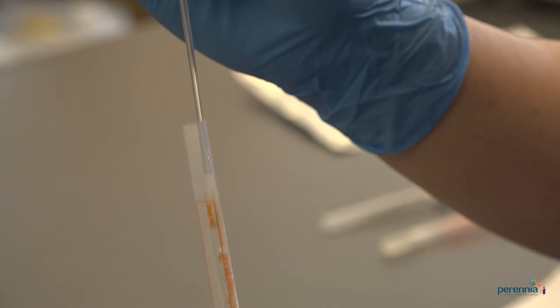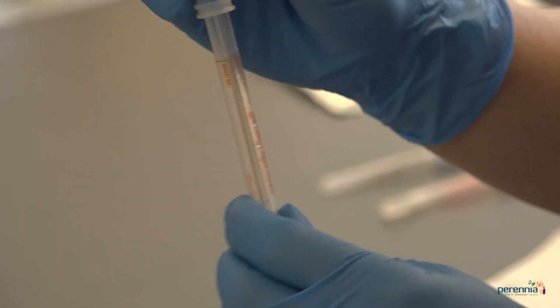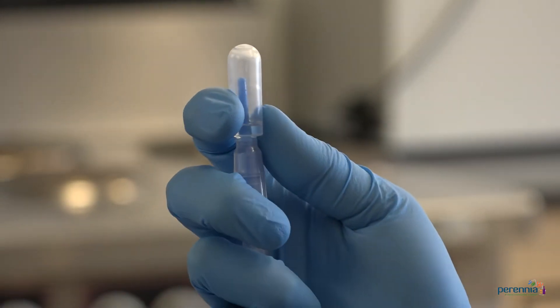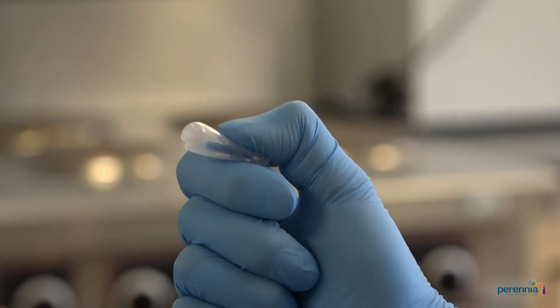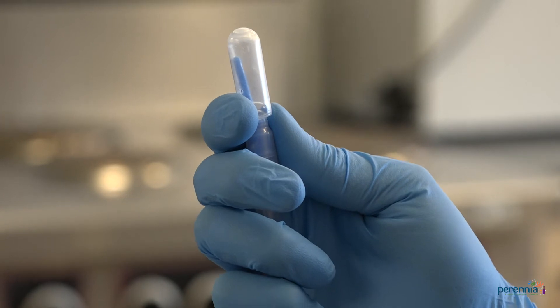Step five, replace swab in tube. Step number six, snap bulb by placing the swab in your fist using your thumb and forefinger to snap the bulb.